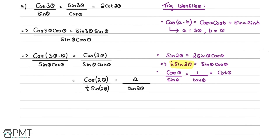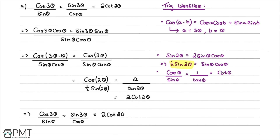We're aiming for 2cot(2θ) and we have 2/tan(2θ). Using the trig identity that cosθ/sinθ = 1/tanθ = cotθ, we can conclude this is equal to 2cot(2θ). We have shown that cos(3θ)/sinθ + sin(3θ)/cosθ ≡ 2cot(2θ), as required. That completes the proof.